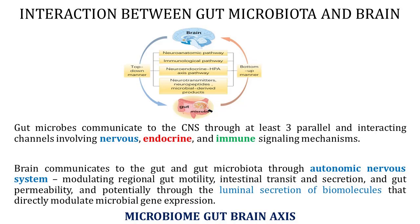Brain also communicates to the gut potentially through the luminal secretion of biomolecules that directly modulate microbial gene expression. Since gut microbiota forms the main communicating system, it will be more appropriate to call it the microbiome-gut-brain axis than just the gut-brain axis. Let's see how gut and brain communicate through the neural system.